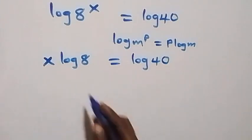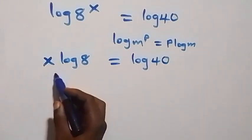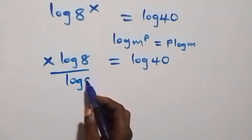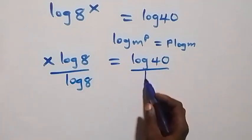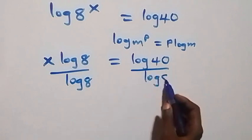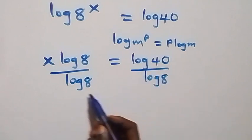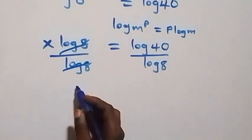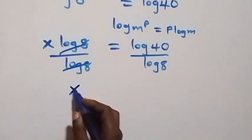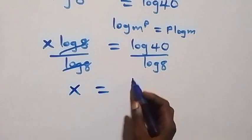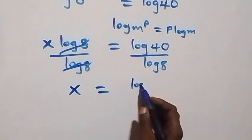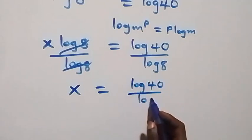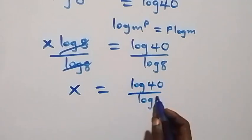Then we can divide both sides by log 8 — divide here by log 8 and also here by log 8. The log 8 cancels each other, then we have x equals to log 40 over log 8.